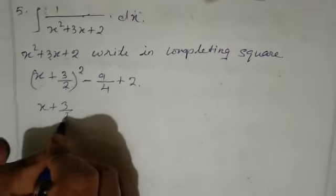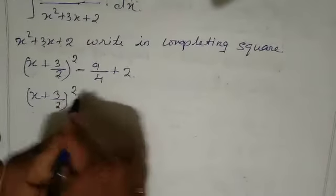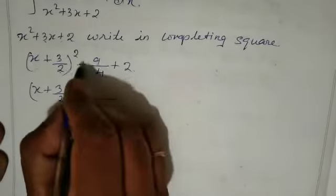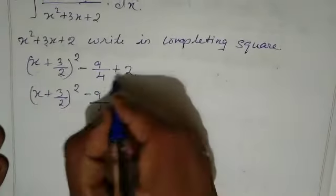And then next line, just write x plus 3 by 2 whole square. Here we have to take LCM. So upon 4, here just write minus 9 and then here 2 fours are 8.